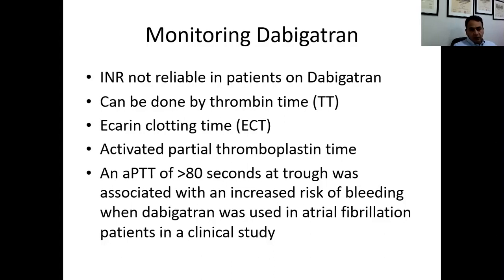Dabigatran activity can be assessed by looking at thrombin time or the ecarin clotting time. aPTT can also provide an indirect measure of dabigatran efficacy. An aPTT greater than 80 seconds at trough — before giving the medication — is associated with an increased risk of bleeding, particularly in clinical studies of dabigatran used in atrial fibrillation. aPTT is easily available and can be used as a marker for dabigatran efficacy or to reduce its side effects.